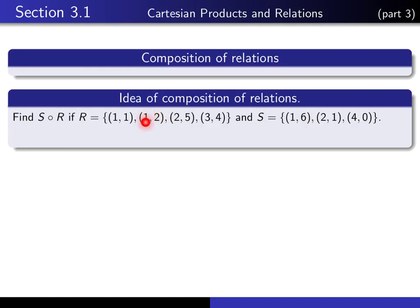Let's look at this (1,2). R relates this 1 to 2, and we follow that 2 here and we see S relates 2 to 1. And therefore, the composition should relate 1 to 1. R relates 2 to 5, and 5 isn't related to anything by S, so we don't do anything with that entry. R relates 3 to 4 and we find 4 here. S relates 4 to 0, and therefore we should view R composed with S as relating 3 to 0.